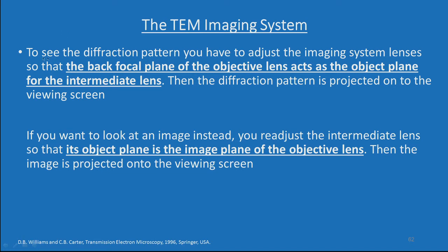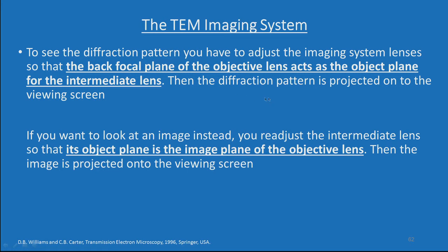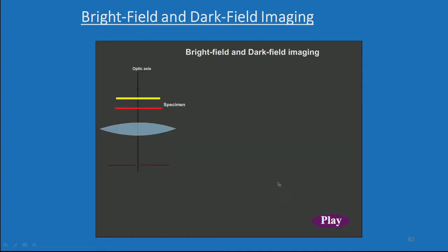To see the diffraction pattern, you adjust the imaging system lenses so that the back focal plane of the objective lens acts as the object plane for the intermediate lens, then the diffraction pattern is projected on the viewing screen. If you want to look at an image instead, you readjust the intermediate lens so that its object plane is the image plane of the objective lens, and then the image is projected on the viewing screen.